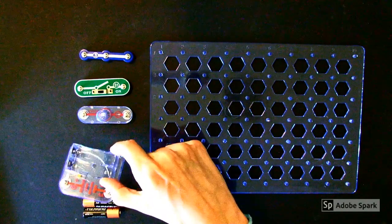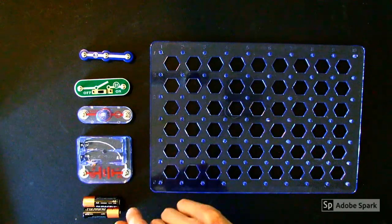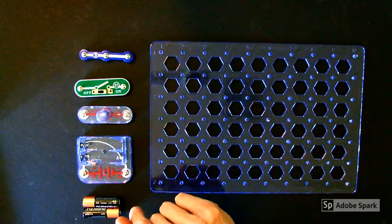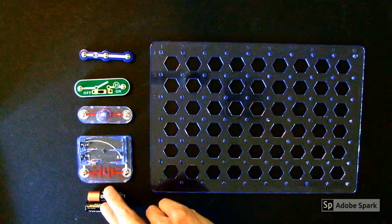Finally, you need a battery holder. Battery holders are what supply electricity to your Snap Circuits. The battery holder requires two AA batteries.